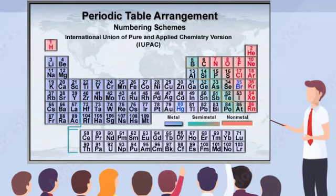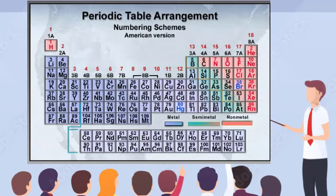The IUPAC system numbers the groups sequentially from 1 through 18 from left to right. Throughout the remainder of this program, both the American and IUPAC group notations will be seen on the periodic table, but the audio portion will refer to the American system.